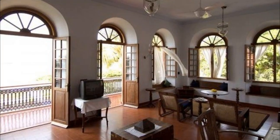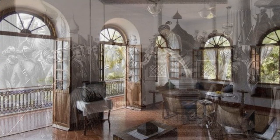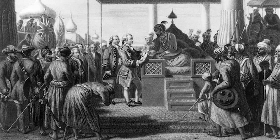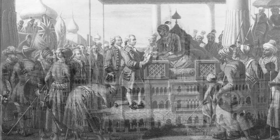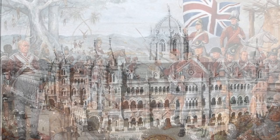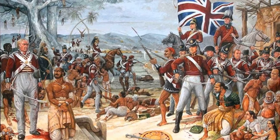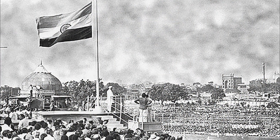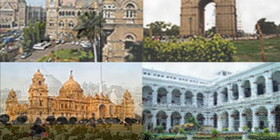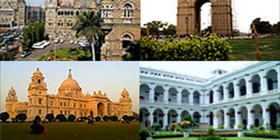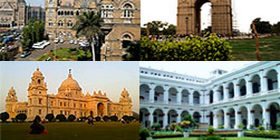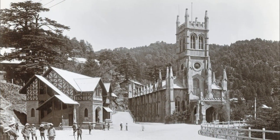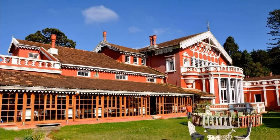The British colonial era in India spanned over three centuries, starting from the year 1615 when the East India Company acquired its first piece of territory in Bombay, through the 1857 revolt and takeover by the British crown in 1858, until the year 1947 when India gained independence. During this period, the British constructed and erected magnificent public buildings and private homes in major Indian cities and at hill stations, which functioned as their summer retreat.